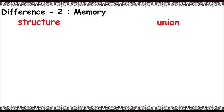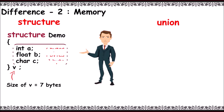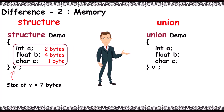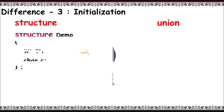The second difference is on memory. The size of a structure variable in this example is 7 — that is, int 2 bytes, float 4 bytes, char 1 byte, total 7 bytes. But in union, the union variable size is 4, because the member which occupies the larger memory among the given members determines the size. Here, float occupies larger memory than int and char, so the size of the variable is 4.